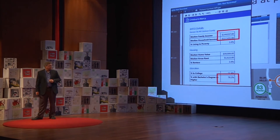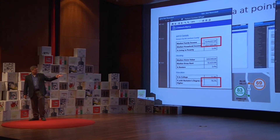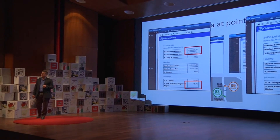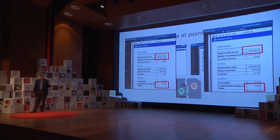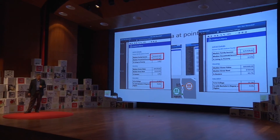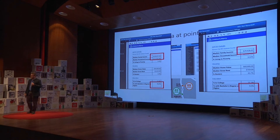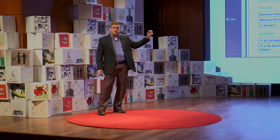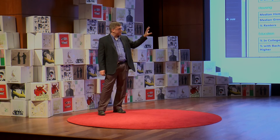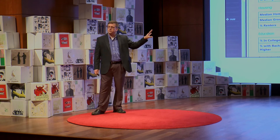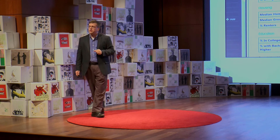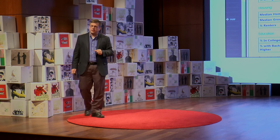The average educational level in the region in green — more than 78% of the population has a college degree. In the area in orange, fewer than 10% of the people have a college degree. What I'm showing you here is a very simple method to put this information at the fingertips of providers during the time of a patient encounter.